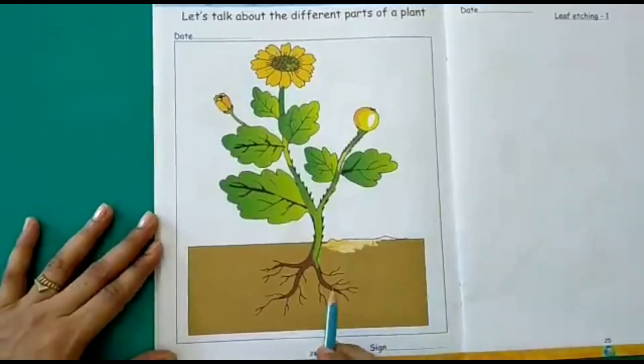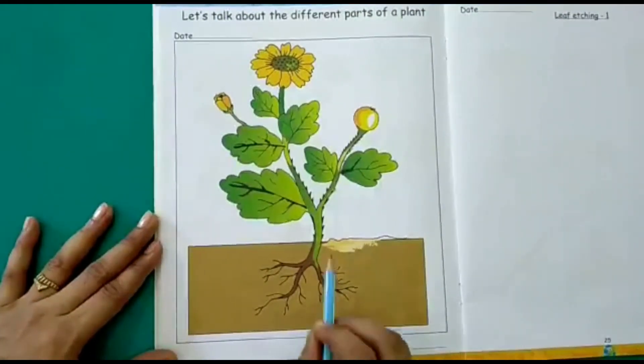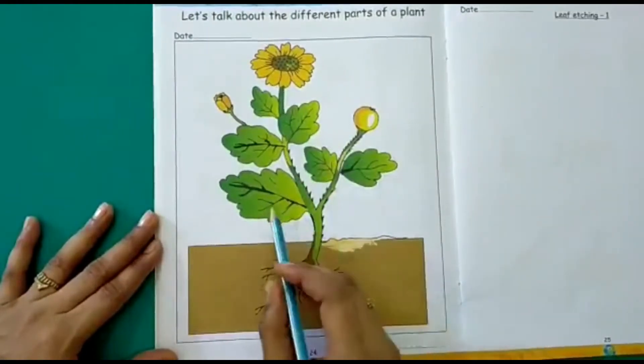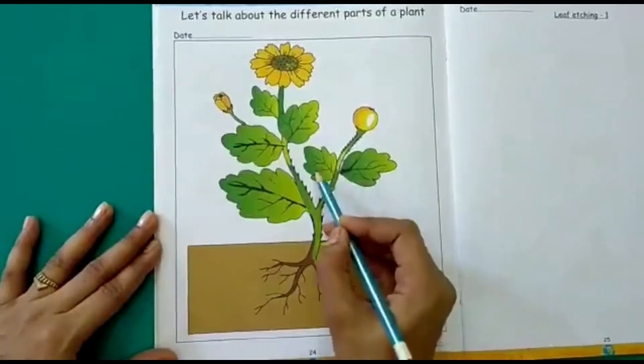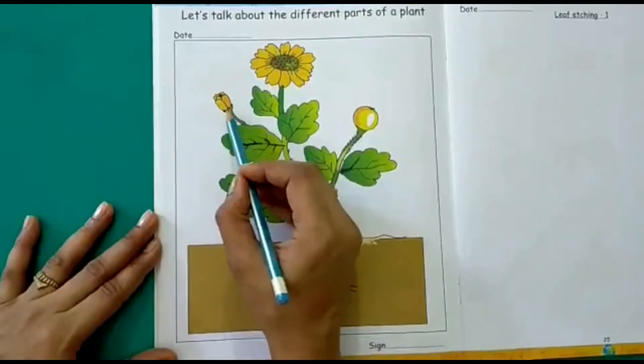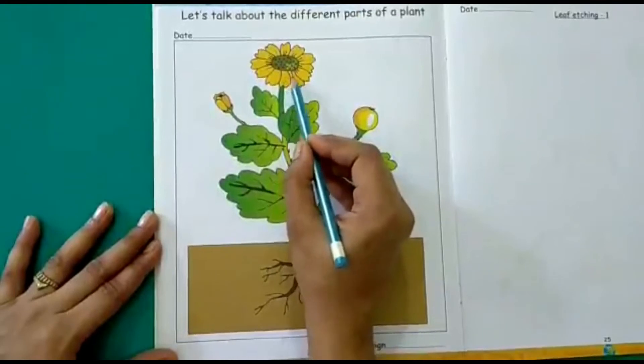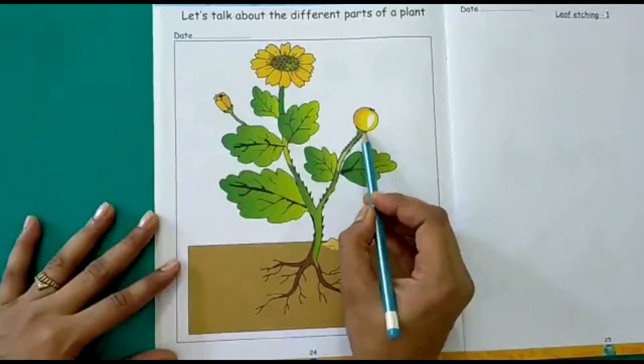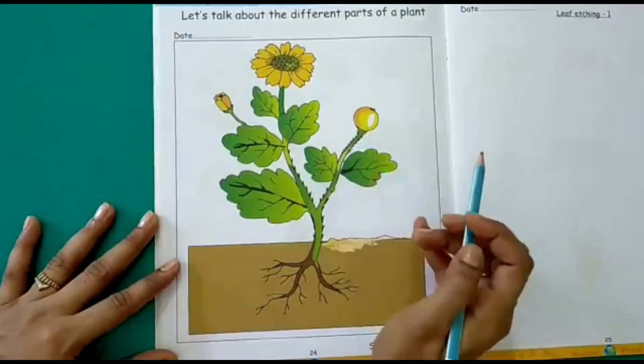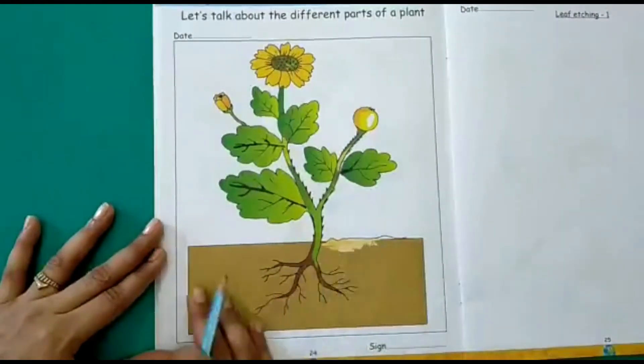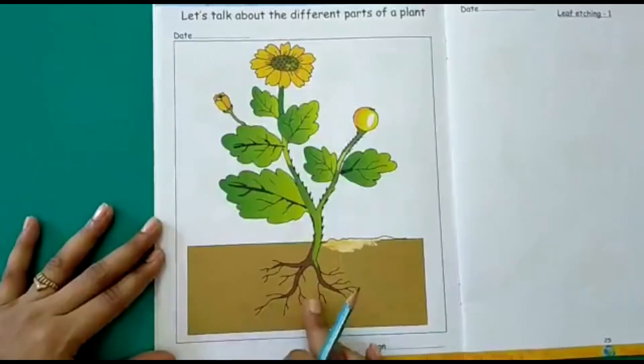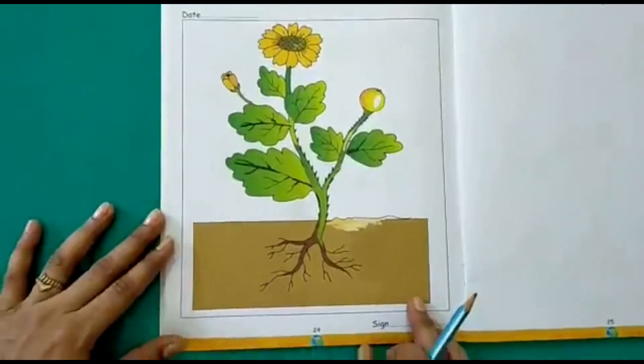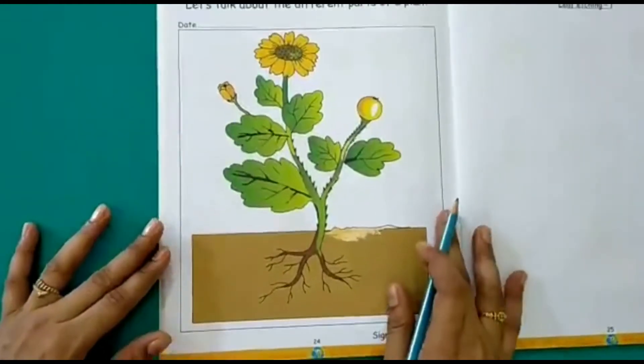So let's repeat once again. These are the roots. This is the stem of the plant. And these are leaves. This is a bud which blooms into a flower. And we get fruit. This is the fruit of the plant. So you just have to look at the picture and learn the different parts of the plant. This is your activity for today children, on page number 24 of your EVS workbook.